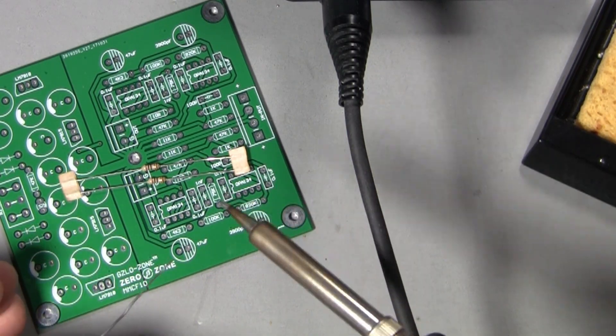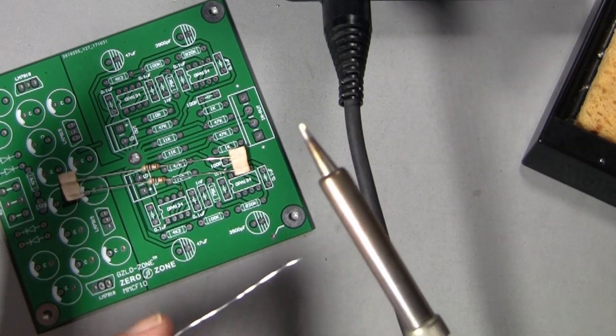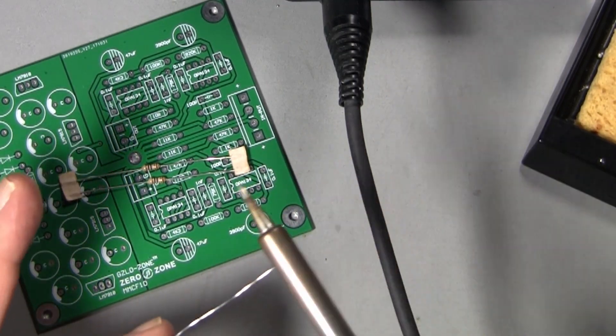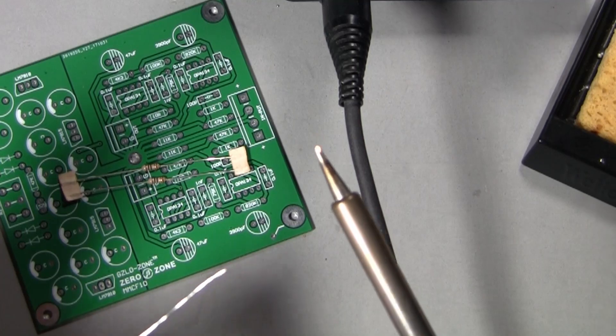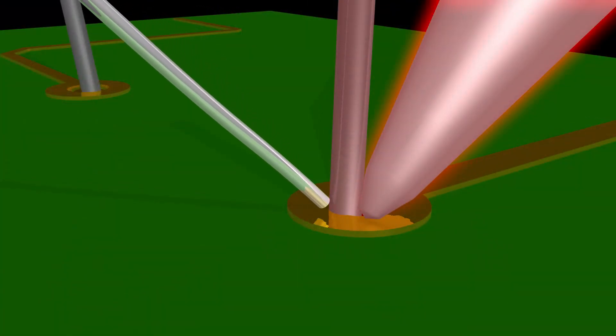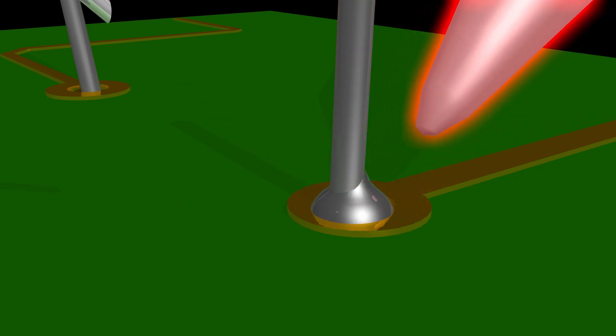Now the rule of thumb with soldering that you'll see everywhere is you heat the work and apply the solder to the work, not the iron. That's true, and that's safe, and that's good. But I have a slightly different take on that.